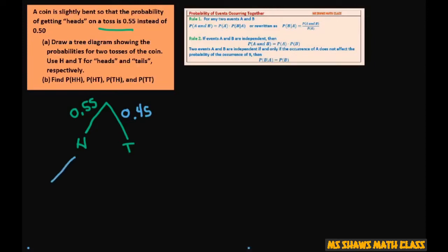And let's do it again. Heads, tails for the second coin. Heads, tails, and then we just fill all this in. So it's 0.55, 0.45, 0.55, 0.45.